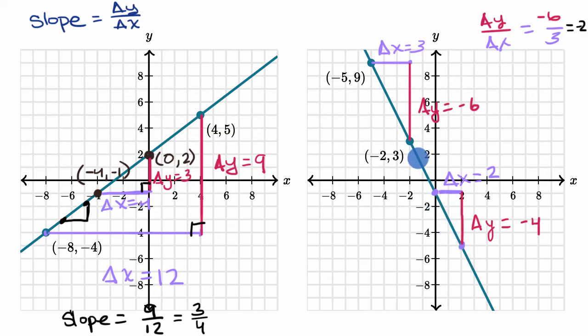And so the slope on this line, no matter which two points we use, is always going to be the same. The slope of a line, by definition, is going to be constant.